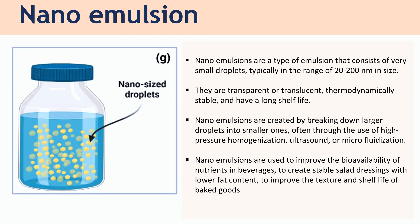Nano emulsions are types of emulsions that consist of very small droplets, typically in the range of 20 to 200 nanometers in size. They are transparent or translucent, thermodynamically stable, and have a long shelf life.